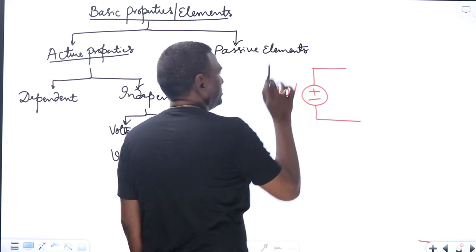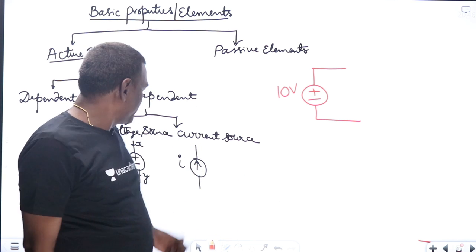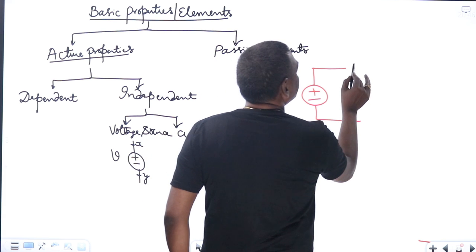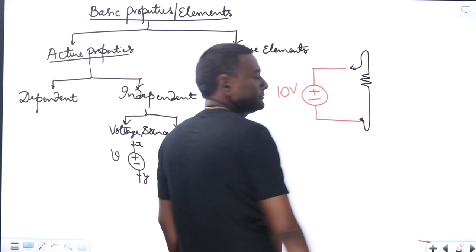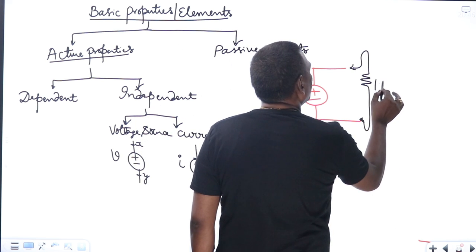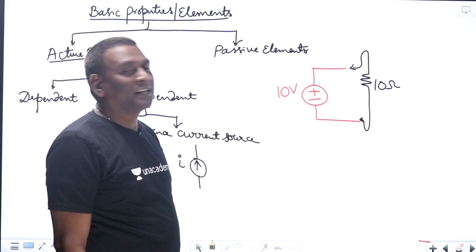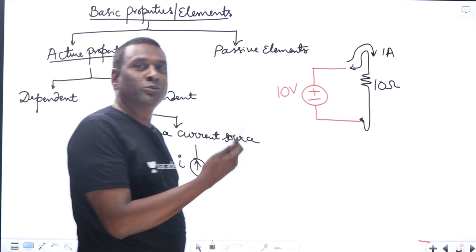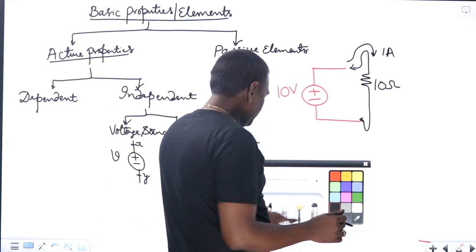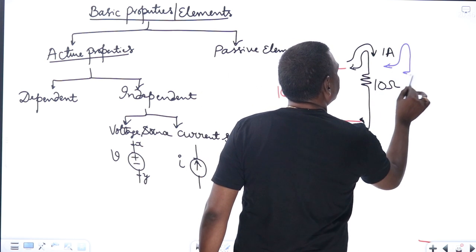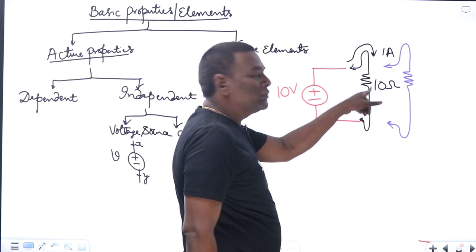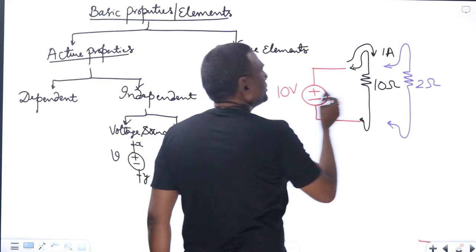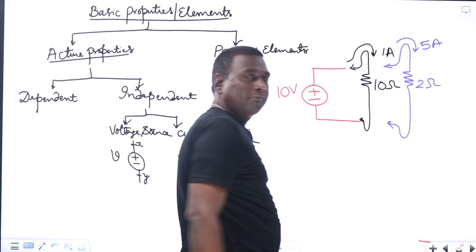Let us think of a 10-volt ideal independent DC voltage source connected to a 10-ohm resistance. By Ohm's law, 10 divided by 10 gives 1 ampere of current flowing. Now if I remove the 10-ohm and connect a 2-ohm resistance to the same voltage source, how much current will flow? 10 divided by 2 gives 5 amperes.